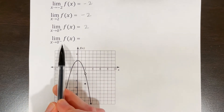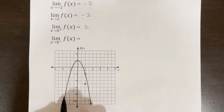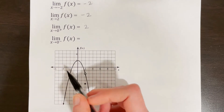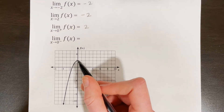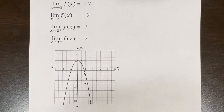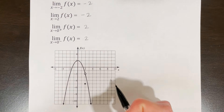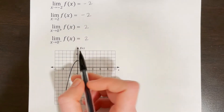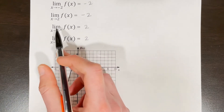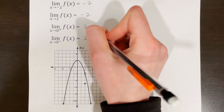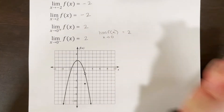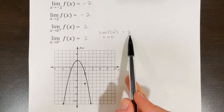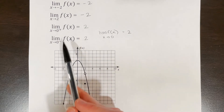Now we evaluate the left-side limit. Coming from the left side as x approaches 0, f of x also looks like it's going to approach 2. The right-side and left-side limits are useful because when they match, the overall limit exists. Since both sides give 2, we can write the limit of f of x as x approaches 0 is equal to 2. We know it exists because the right-side and left-side limits match.